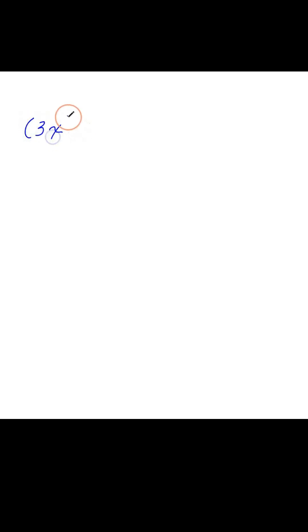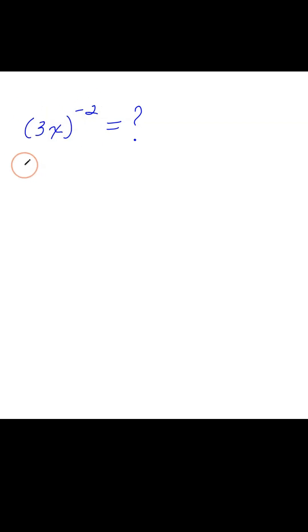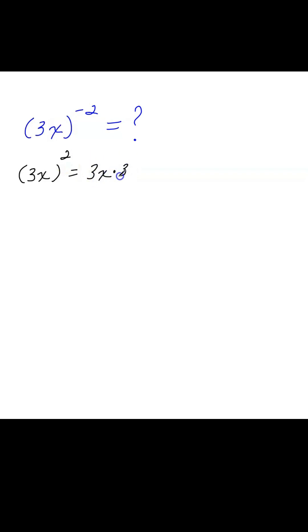Let's look at this problem: 3x to the power of negative 2. This is tricky because of the negative exponent. Hopefully you know how to do this. When there's a positive exponent, that just means 3x multiplied by itself two times. 3x times 3x is 9x squared.